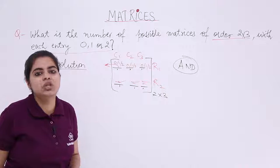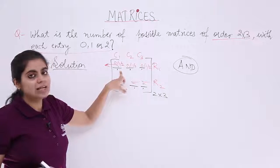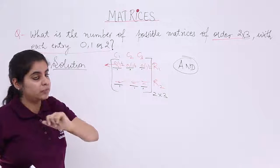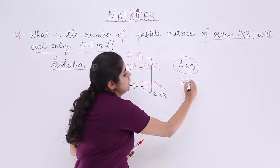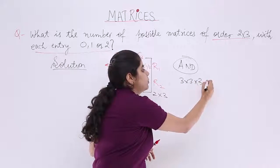we will be using the multiplication law of counting which we studied in class 11. So how many possibilities for position number 1? Three possibilities: either 0 or 1 or 2. Position number 2 also has 3 possibilities. Position number 3 also has 3 possibilities.